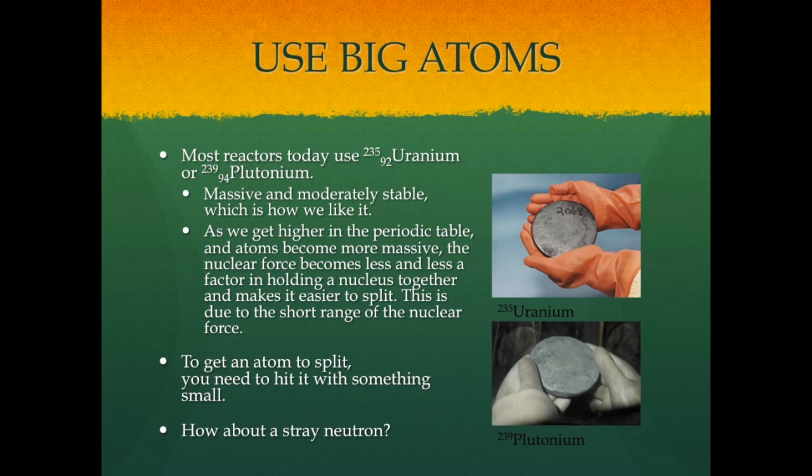These uranium and plutonium atoms are very, very big compared to the helium atom. Helium was only about four nucleons; uranium-235 and plutonium-239 have 235 to 239 nucleons — essentially a massive piece of Jell-O. It's massive, moderately stable, and doesn't naturally want to separate. That's about how we like it — right on that ragged edge of wanting to split. As we go higher in the periodic table and atoms become more massive, the nuclear force becomes less of a factor in holding the nucleus together, making it easier to split, due to the short range of the nuclear force.